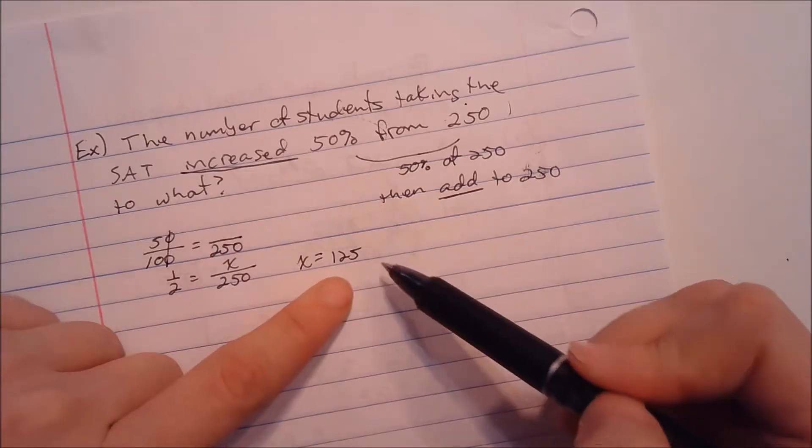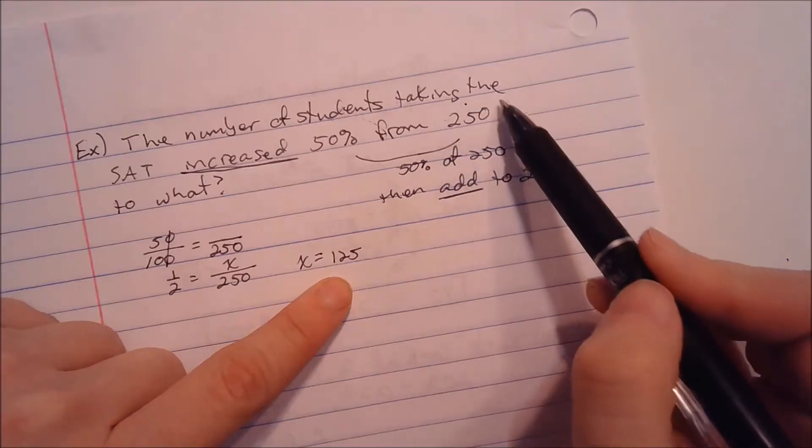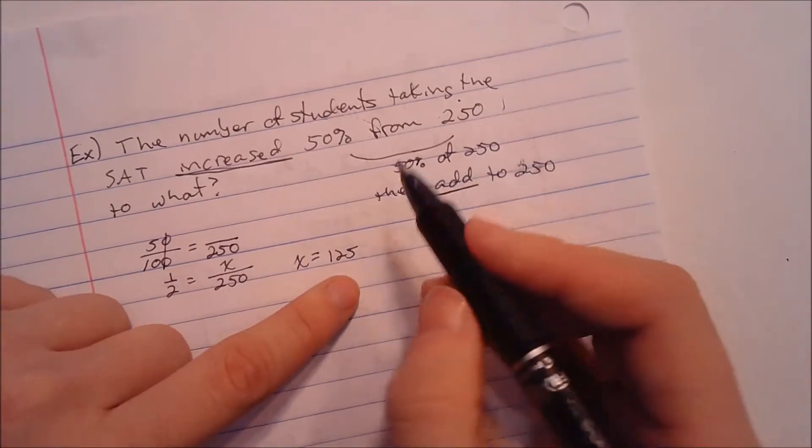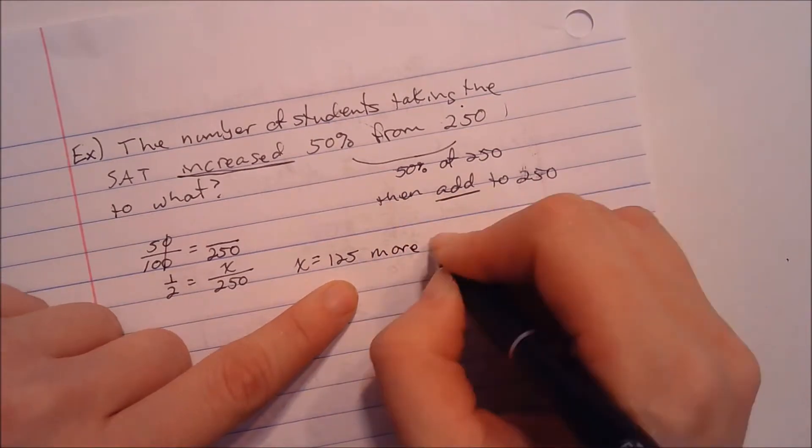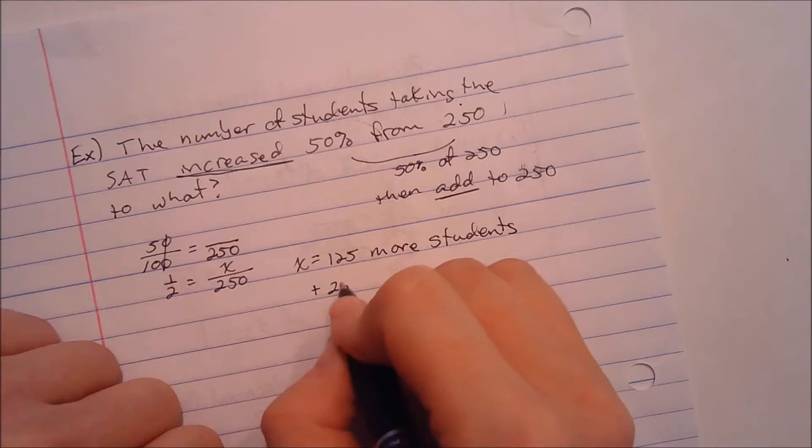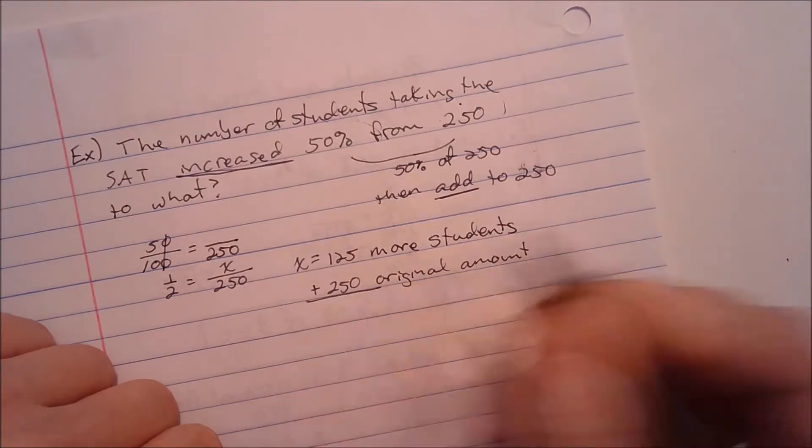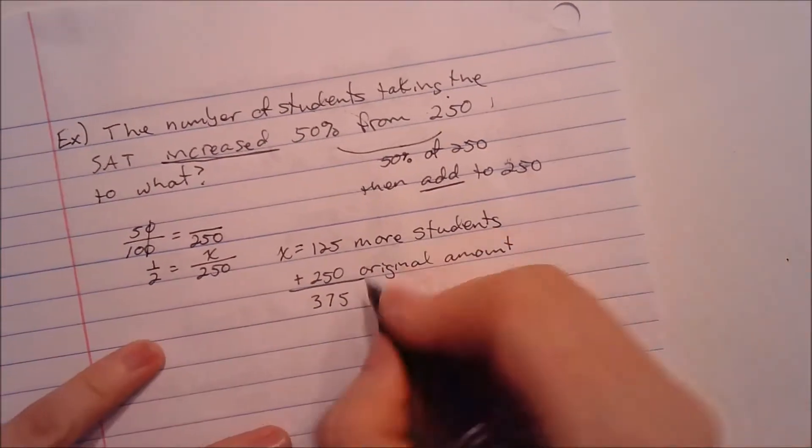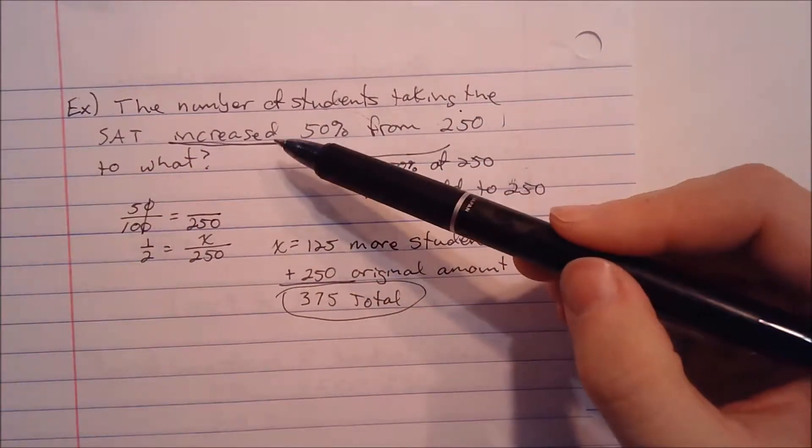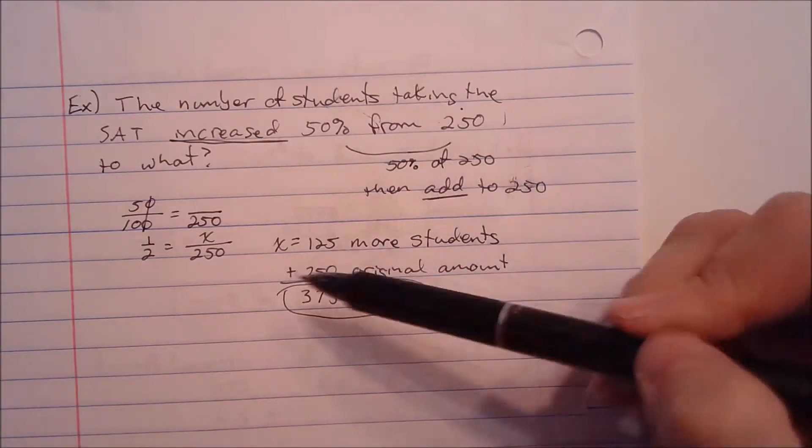That's not what it increased to. Notice, we had an increase of 50%. That means my final answer needs to be bigger than 250, because more kids took the SAT. I am now going to add this. This is 125 more students. Then I want to add that to the 250 original amount, and I get 375 as my new total. If the number of kids taking the SAT increased 50% from 250 to 375.